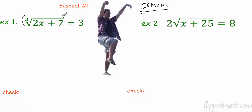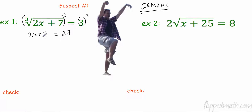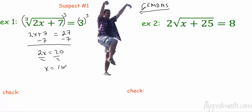So what's the opposite of taking a third root? Well, that's putting something to the third power. Over here I have 2x plus 7, because the third power undoes that, and 3 to the third is 27. Now I solve it just like normal. I have adding and multiplying — I need to get rid of adding first. So I'm going to subtract 7 on both sides: 2x equals 20, then divide by 2, and x equals 10.